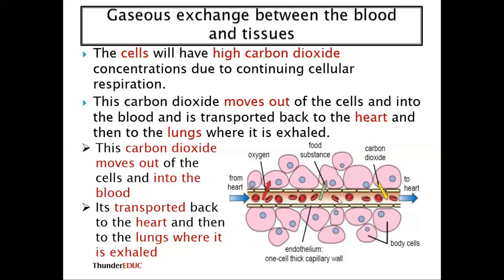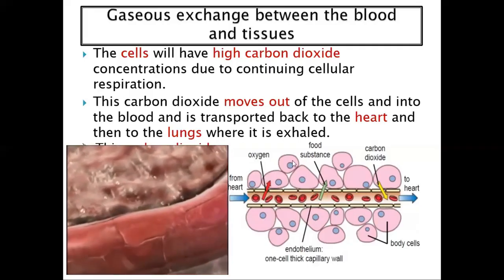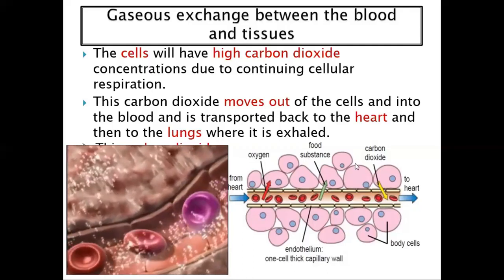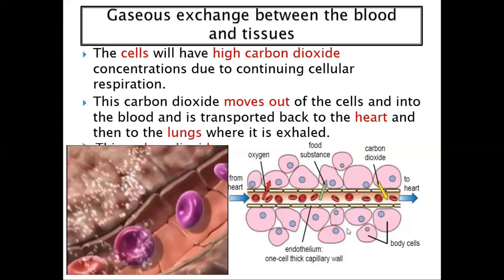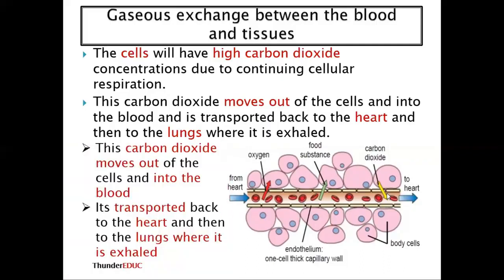The blood carries a large amount of oxygen, which diffuses into the cells to carry out respiration. The product of respiration is carbon dioxide, so the cells accumulate high amounts of it. This carbon dioxide diffuses into the blood and is taken back to the lungs, where the heart pumps it and it is exhaled out of the body.